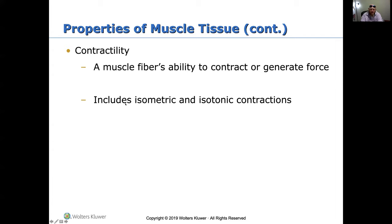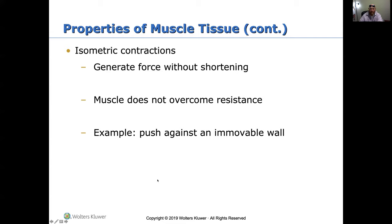Contractility is the muscle fiber's ability to contract, generating force. It can be isometric or isotonic. Isometric contractions generate force without shortening — the muscle does not overcome the resistance. For example, pushing against an immovable wall or pressing your hands together without either side winning. That is an isometric contraction — you are still contracting, just with no movement, no lengthening or shortening of the muscles.